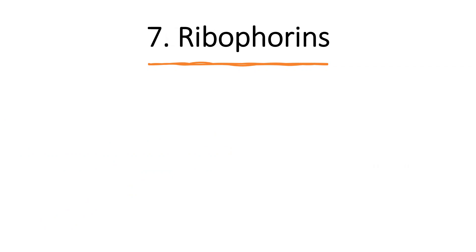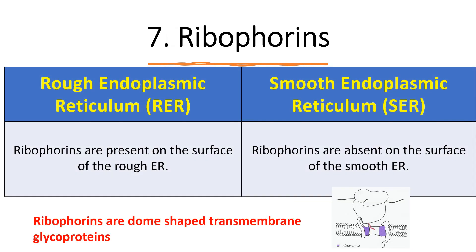One term we use is ribophoreins. These are dome-shaped transmembrane glycoproteins present on the endoplasmic reticulum membrane. Ribophoreins are present on the surface of rough endoplasmic reticulum and absent on the surface of smooth endoplasmic reticulum. These transmembrane glycoproteins normally help in communication.